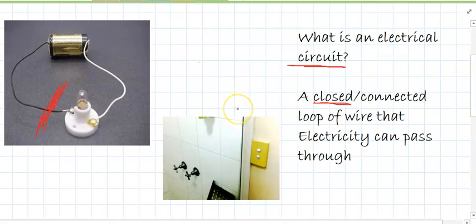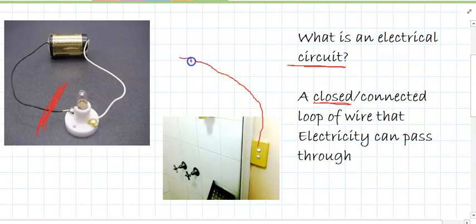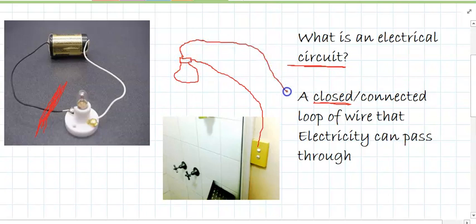Everything that uses electricity has a circuit in it to allow electricity to flow. Behind all the switches and lights in your house, there are wires that join up the circuit. In this house, there's a light switch, and behind the wall there are wires that go up to the light globe in the roof, then loop down to a power point, and back to the switch. Everything from your phone, to the TV, to your washing machine — they all have electrical circuits in them.